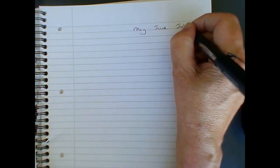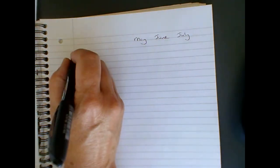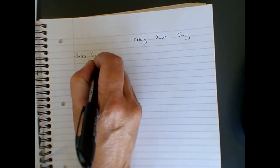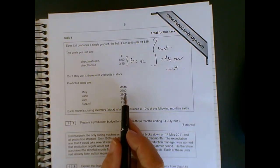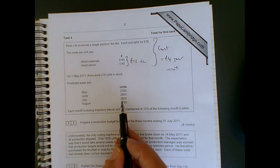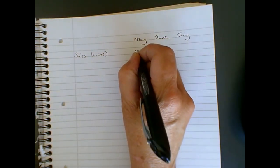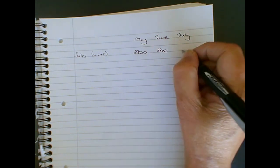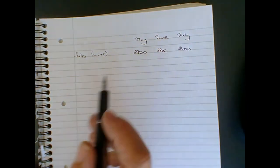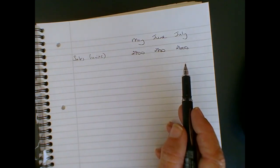What we need to do is start with our columns. We're doing a three-month budget ending in July, so we want May, June and July. Now it's in units, not in pounds, but remember that the starting point is going to be the sales figure. So we need to know how many we're going to sell: 2,700, 2,800 and 2,600. The starting point for a production budget is always the sales figure.